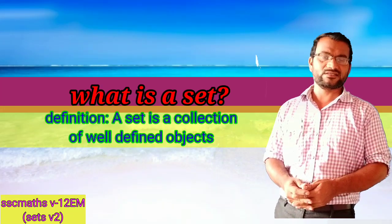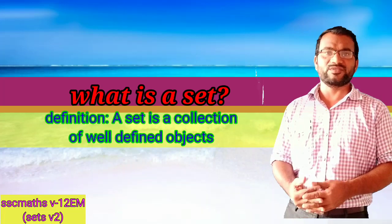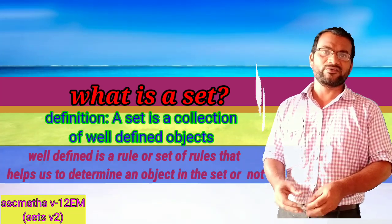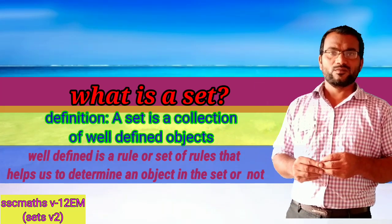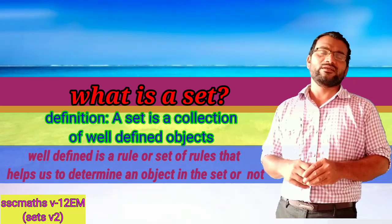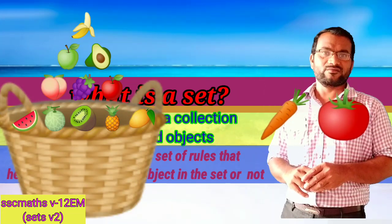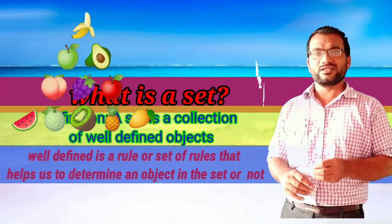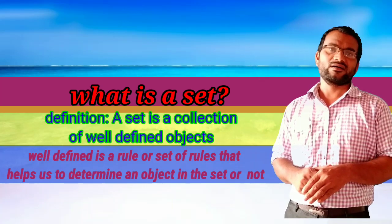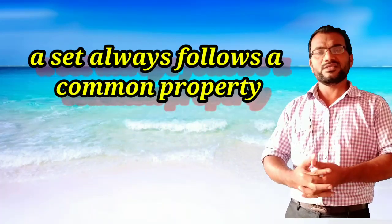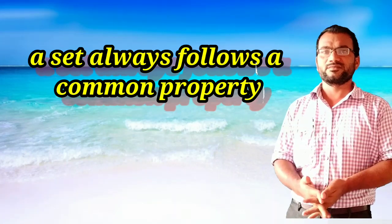What is a set? Generally, a set is a collection of well-defined objects. What is well-defined? The term 'well-defined' means the rule or set of rules that helps us to determine whether an object is in the set or not. A set always follows a common property — that is well-defined.